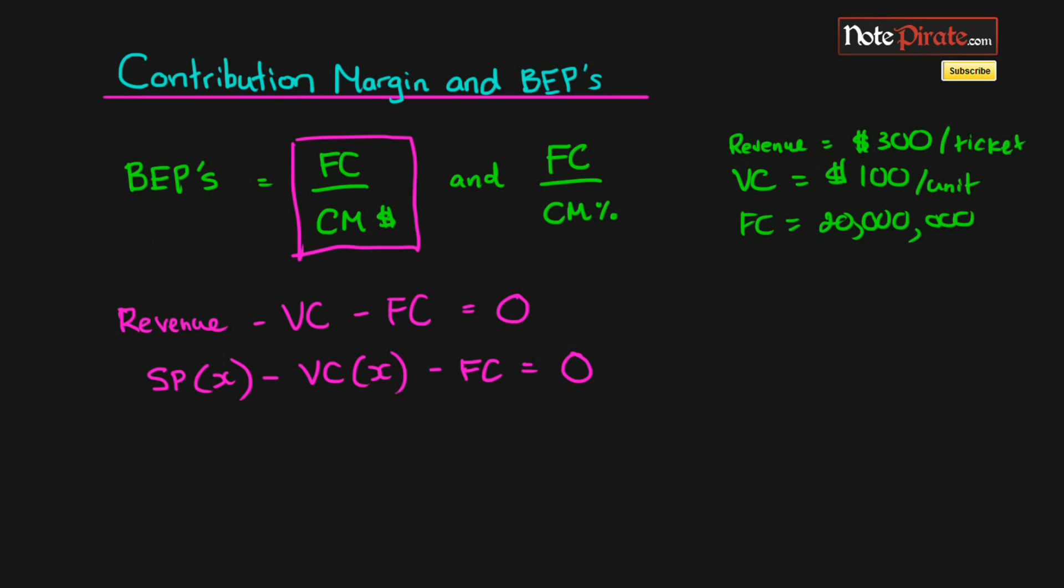And when we substituted these values, we had 300x subtract 100x minus $20 million equals zero.